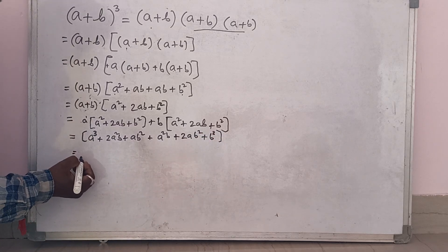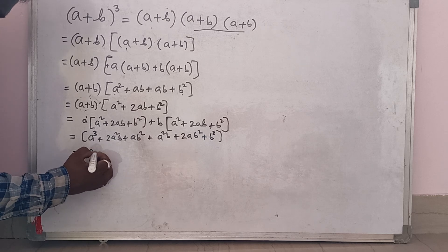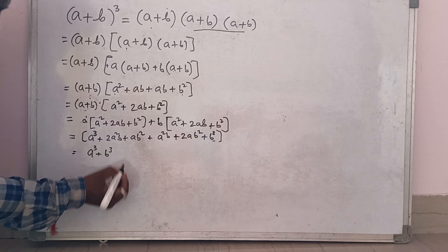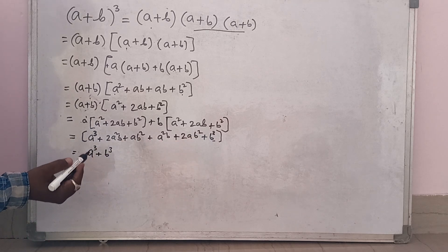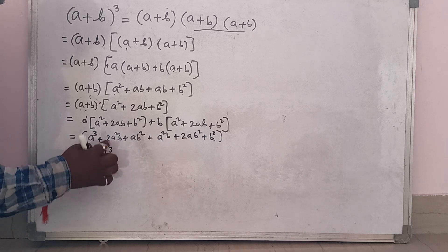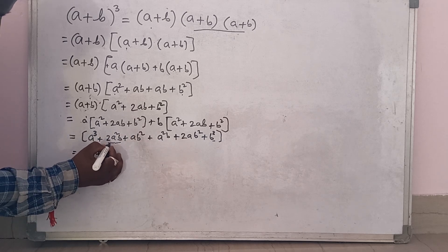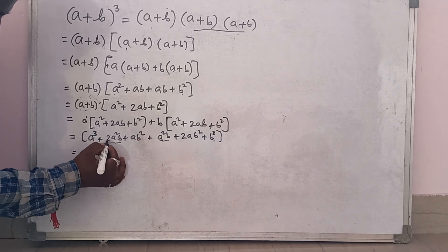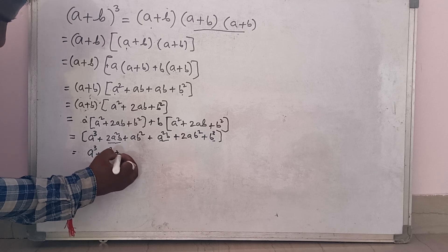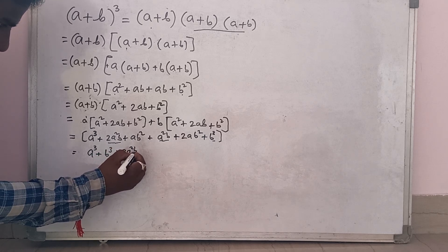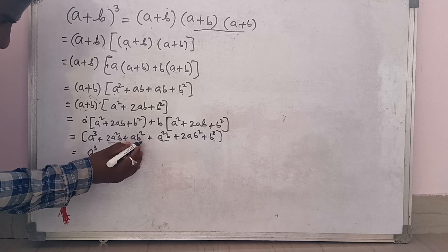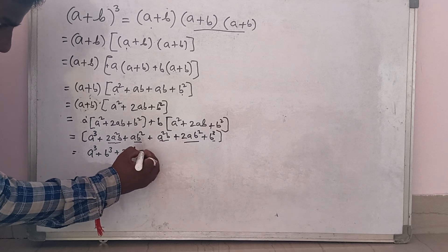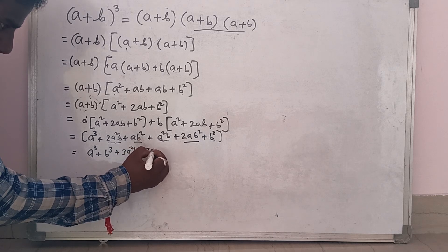Can I write in sequence form? A cube, plus b cube. Now collecting like terms: 2a square b and a square b — that is 2 plus 1 which is 3a square b. And for the b square terms: 2ab square plus ab square will become 3ab square.